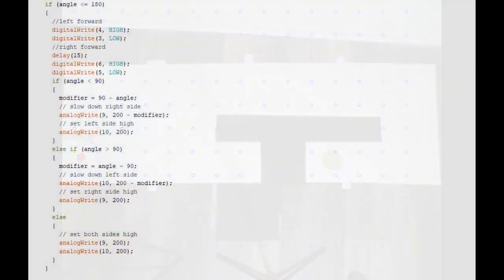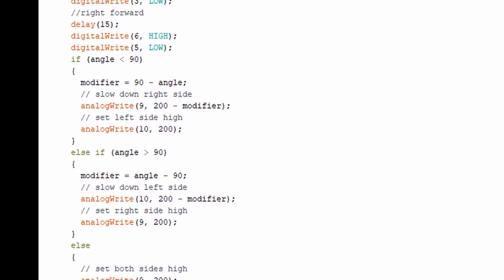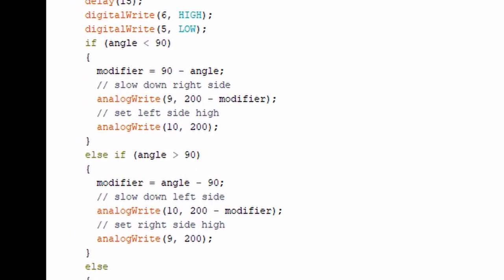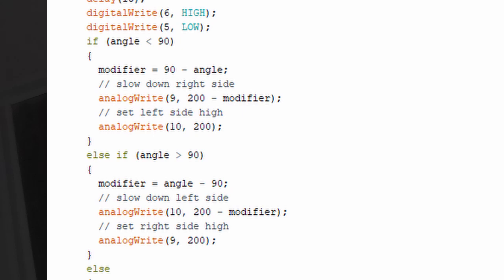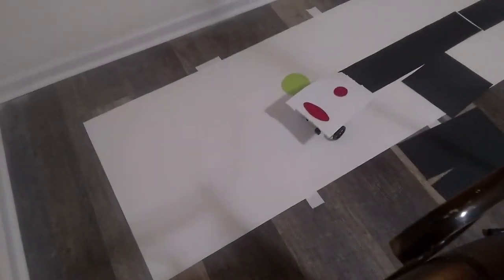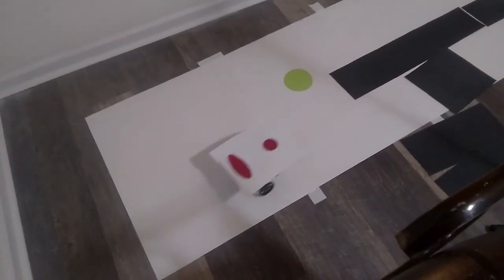Another design choice we had to make was how to send information to the robot. In the end, we settled on a system where we would send the robot a direction angle. If the robot missed the target, it would just back up and try again.